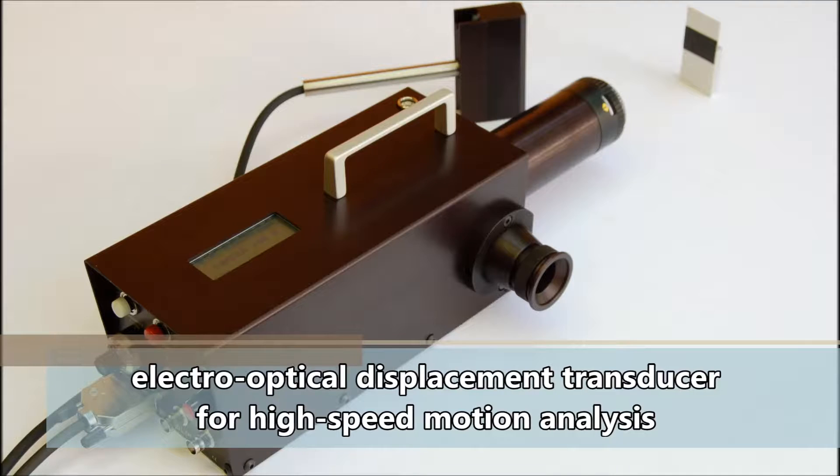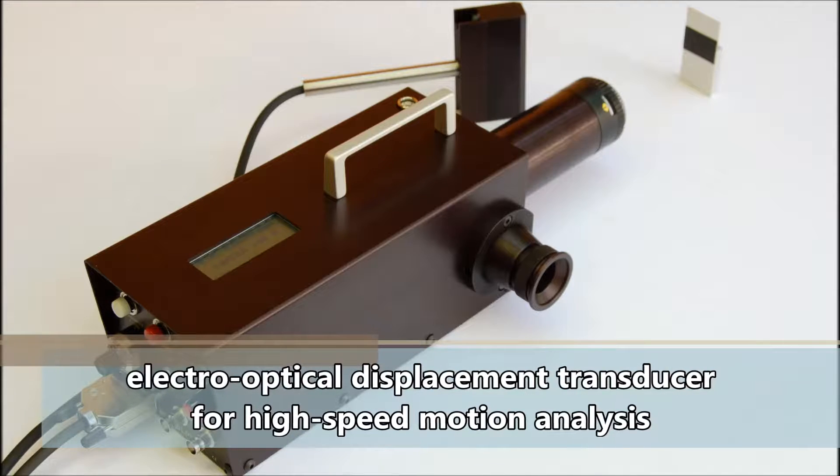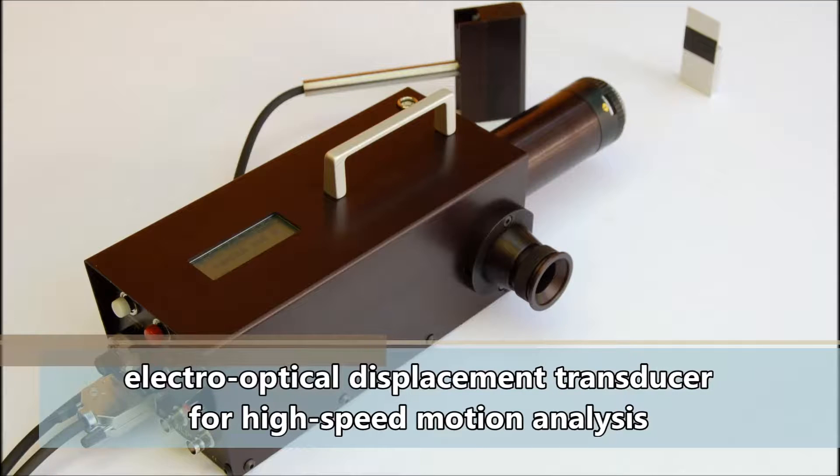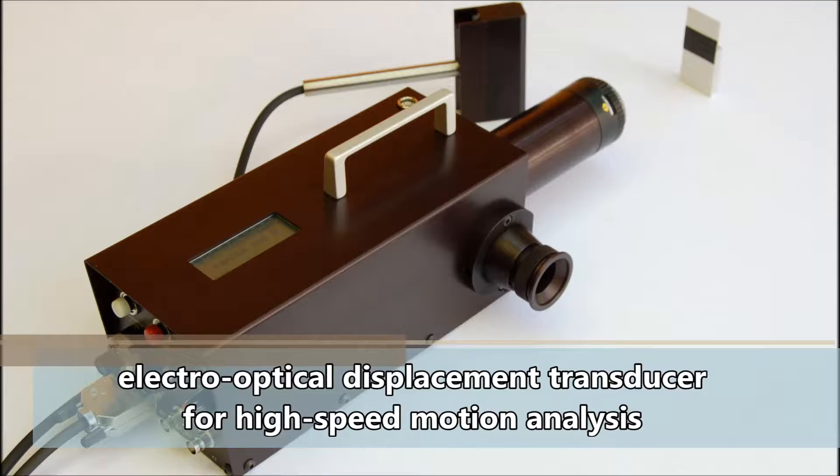Model 100R is an electro-optical displacement transducer designed for high-speed motion analysis. It contactlessly measures the motion of a black and white edge on a material sample.